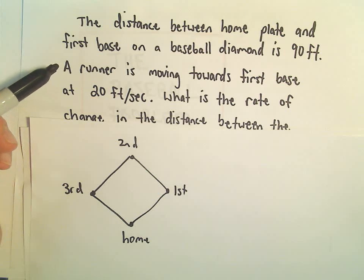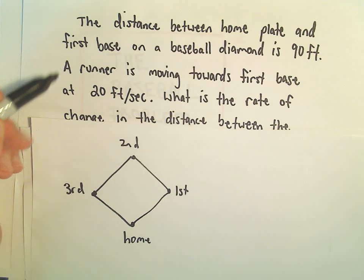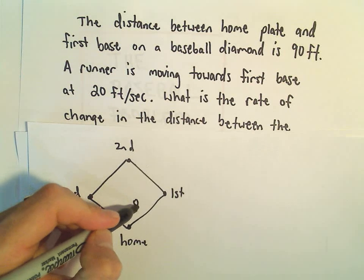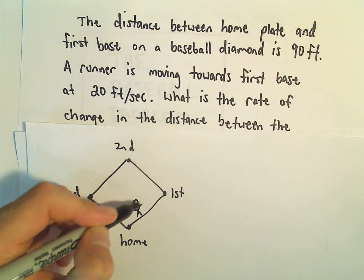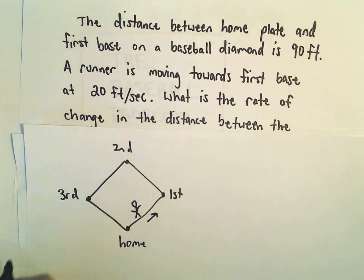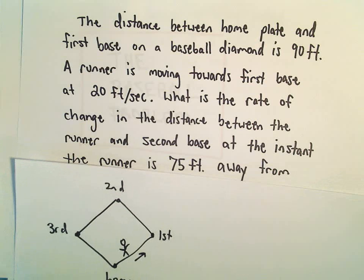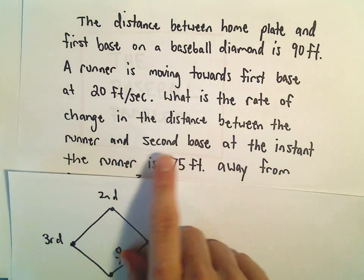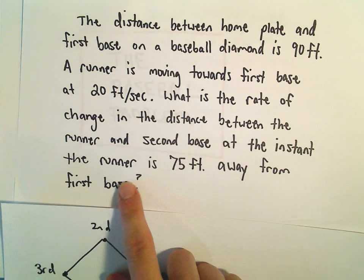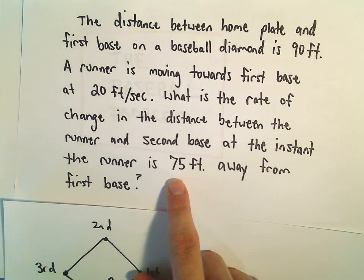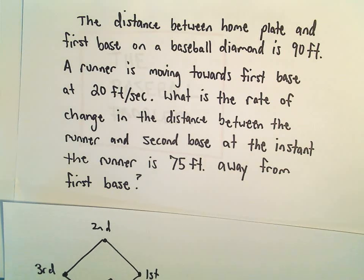And so a runner is running towards first base at a rate of 20 feet per second. So here's my little person running towards first base. We want to know what's the rate of change in the distance between the runner and second base at the instant when the runner is 75 feet away from first base.